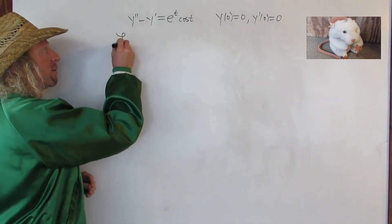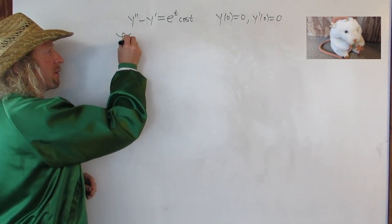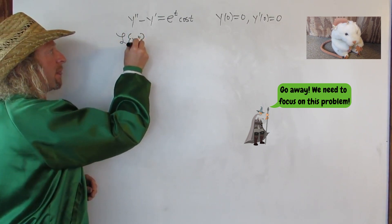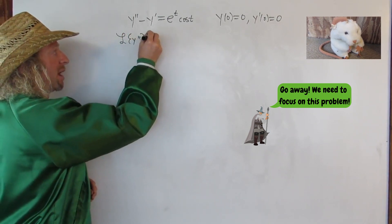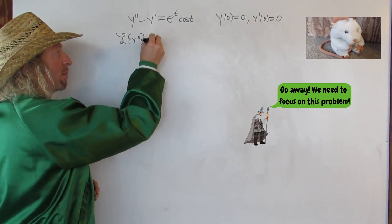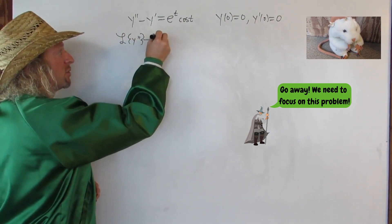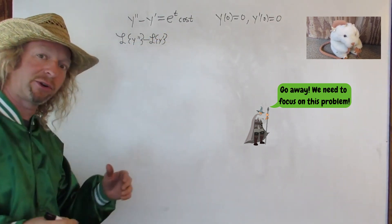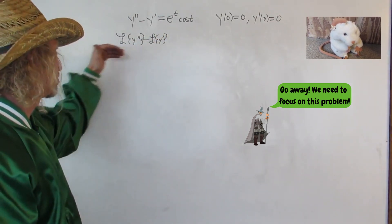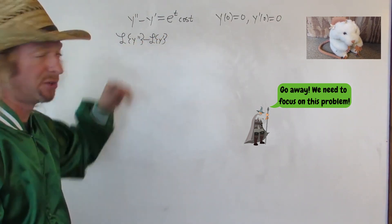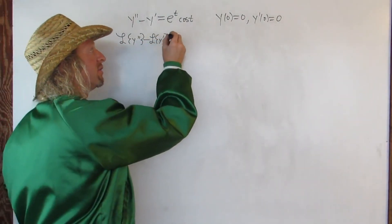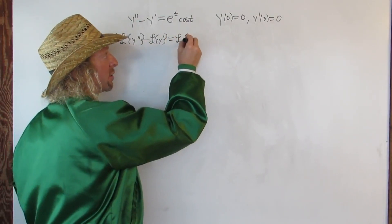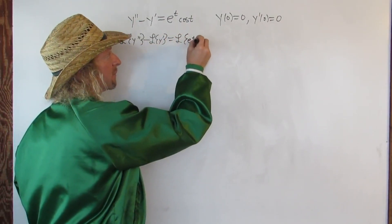So here we have the Laplace of y double prime minus Laplace of y prime. You can do that because the Laplace transform is a linear operator — it distributes like that, you're allowed to do that. And here you have the Laplace of e to the t cosine t.